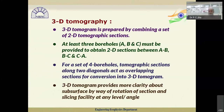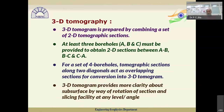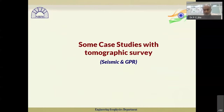We can generate tomograms in both 2D and 3D. A 3D tomogram is prepared by combining a set of 2D tomographic sections. At least three boreholes must be provided to obtain 2D sections between A-B, B-C, and C-A. With four boreholes, two diagonals are connected, acting as overlapping sections to convert 2D sections into a 3D tomogram. 3D tomography provides more clarity about subsurface features through rotation and slicing at any level or angle. The theoretical background presented here will be demonstrated through case studies using both seismic and GPR methods.